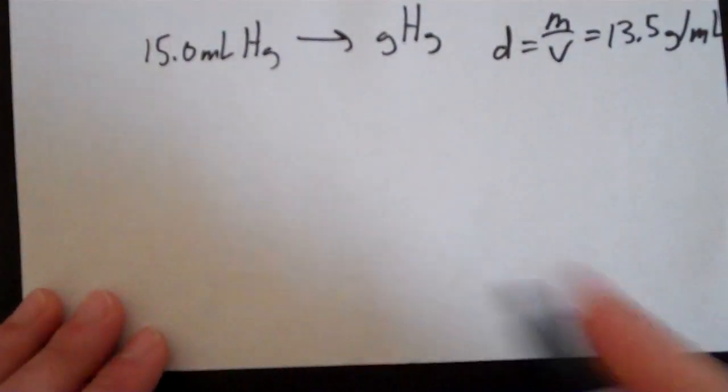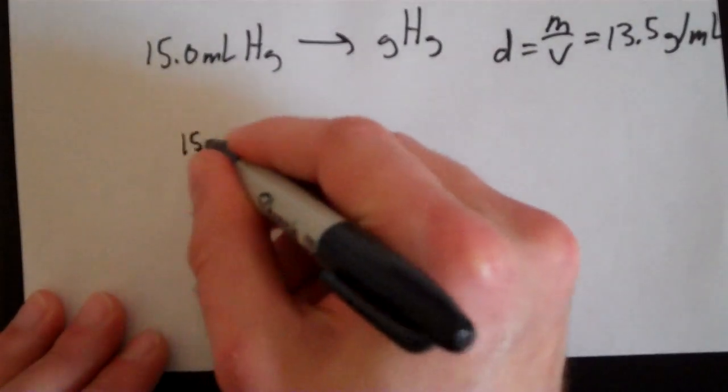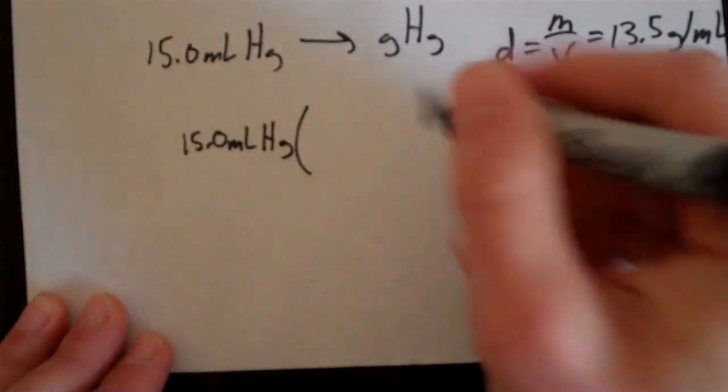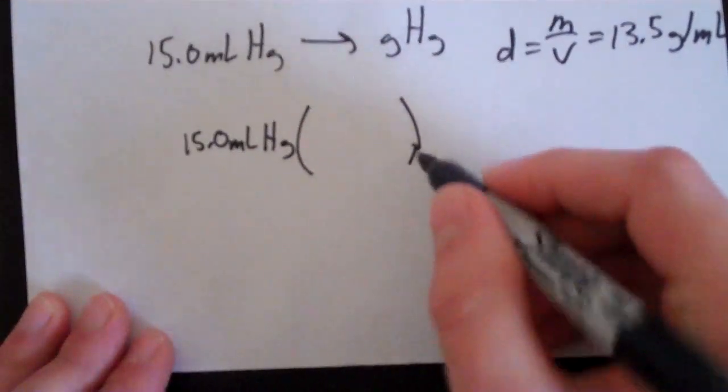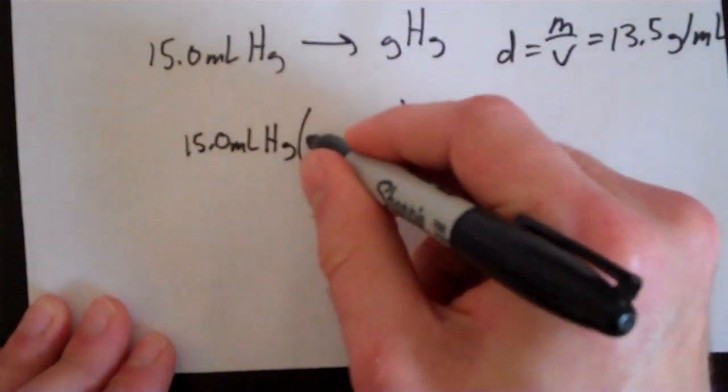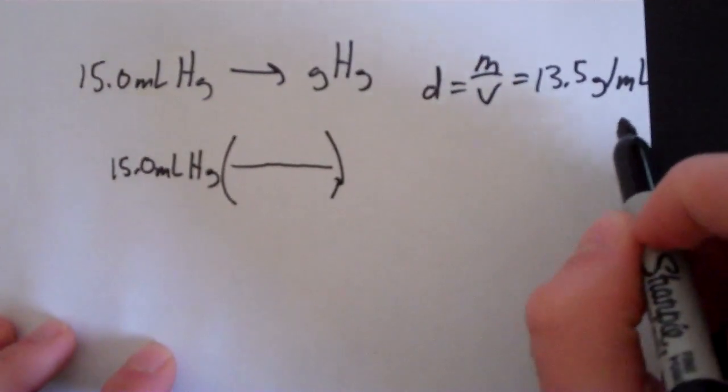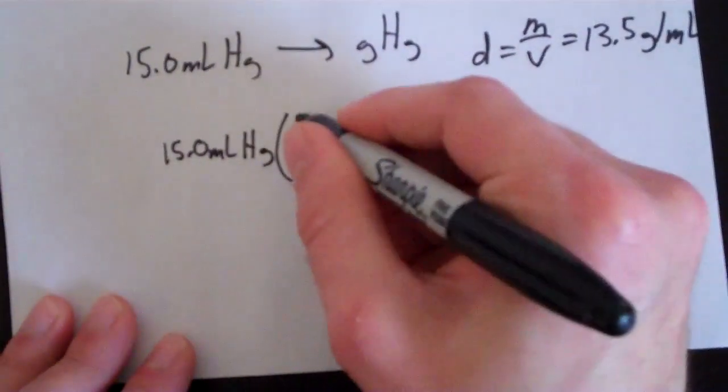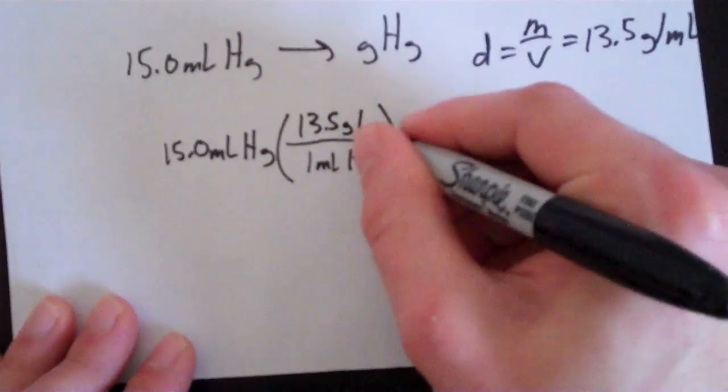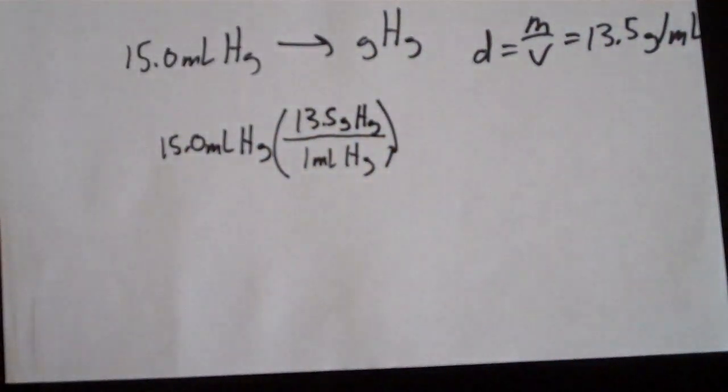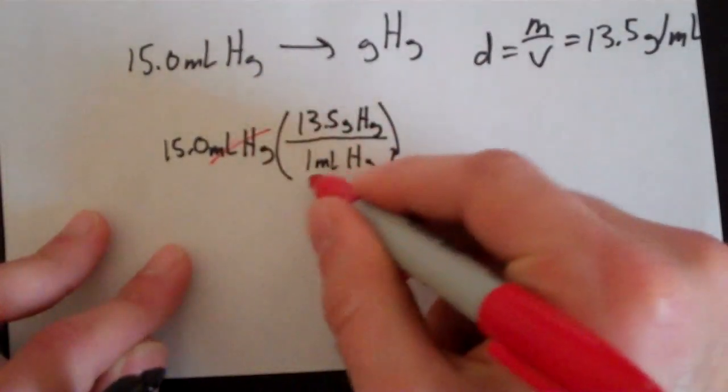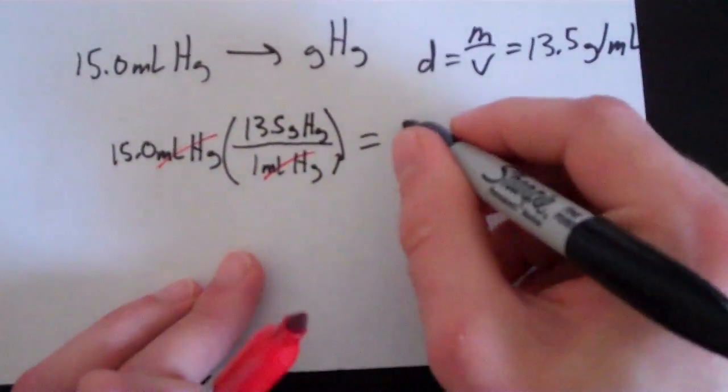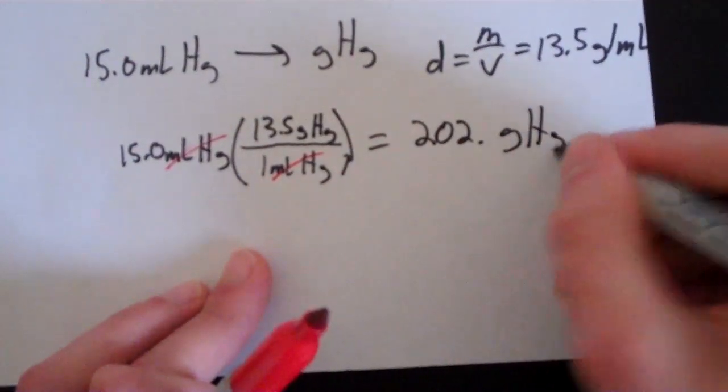And now I'm going to use the density as the conversion factor to convert from volume to mass. So this says that the density is 13.5 grams per milliliter, so that means that for every one milliliter of mercury, we have 13.5 grams of mercury. Milliliters of mercury cancel, and we end up with 202 grams of mercury.